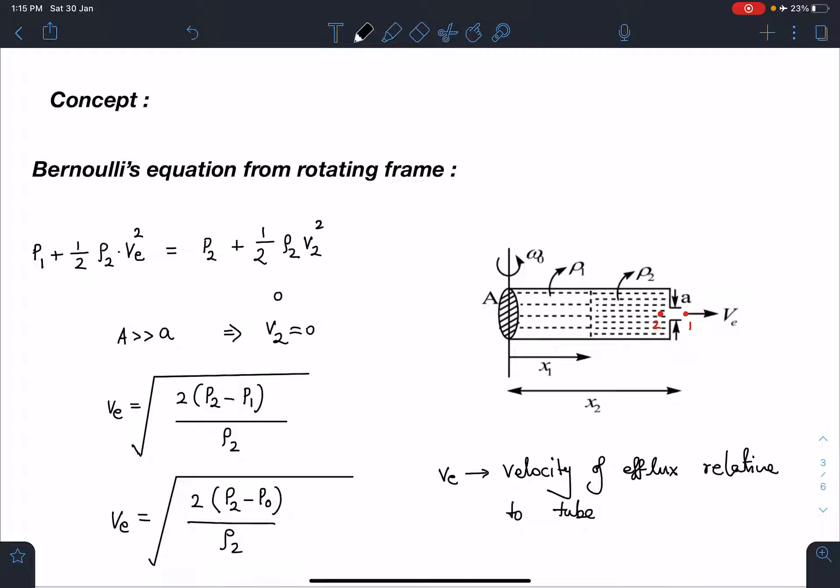I can write here p2 plus half rho V2 square. And if you simplify this we can use equation of continuity as well. You will see here this term will be nearly 0 or we can ignore it. The reason being here because cross section area is very very large.